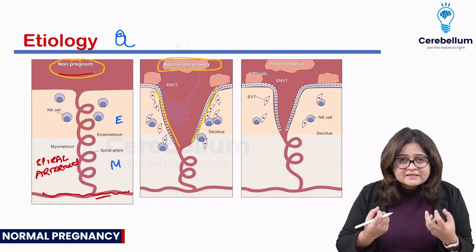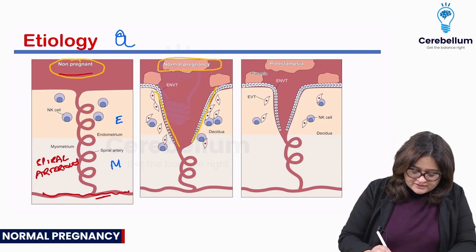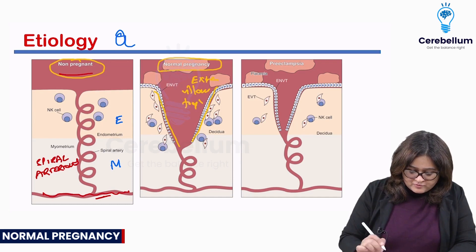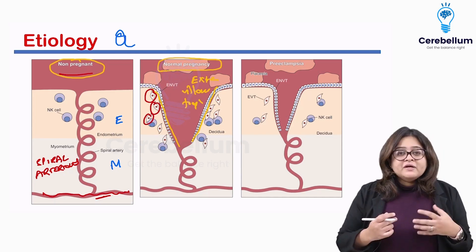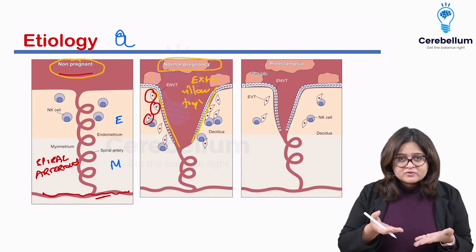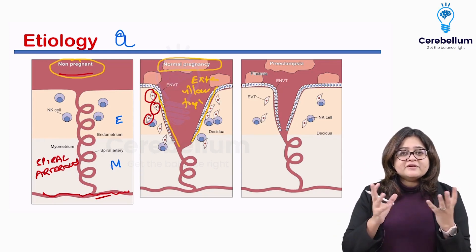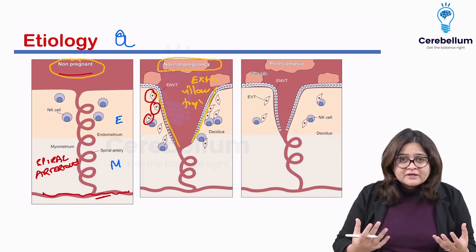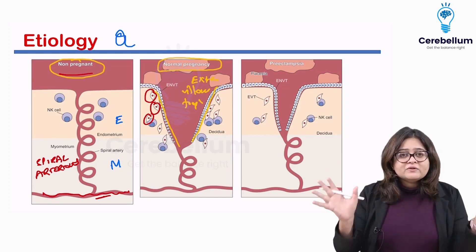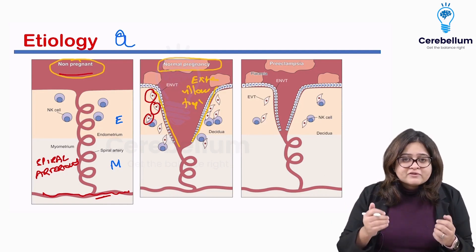This dilatation occurs because in pregnancy, the extra villous trophoblast — these cells you see here — go and line the spiral arterioles. By lining them, they make them very relaxed and cause vasodilatation, which is very important because the uteroplacental unit needs a lot of blood flow in pregnancy. This is achieved by invasion by the extra villous trophoblast.